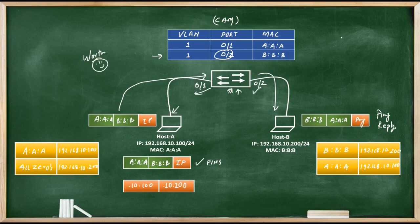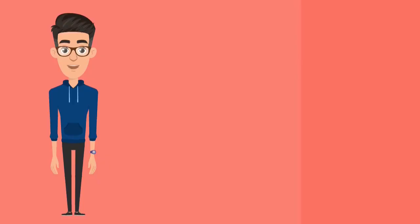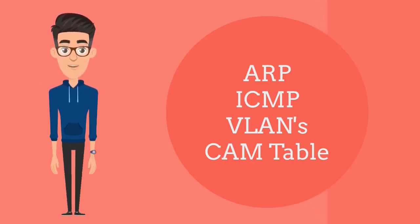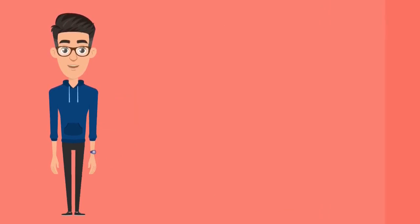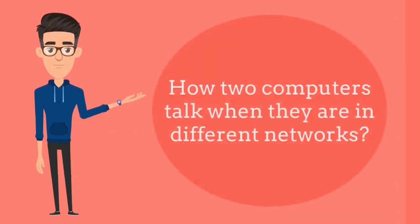The above discussion also covers many networking fundamental questions like: can you explain ARP, how does a switch build its CAM table, and how does a switch forward frames? In this video we learned the concepts of ARP, ICMP ping, VLANs to some extent, and the CAM table. In the next video we are going to discuss the third question of the series: how do computers talk when they are in different networks? Hope you enjoyed this video — see you in the next one.